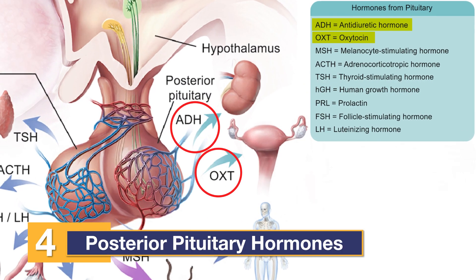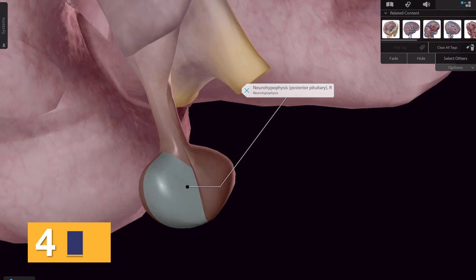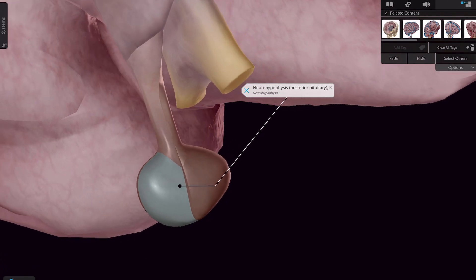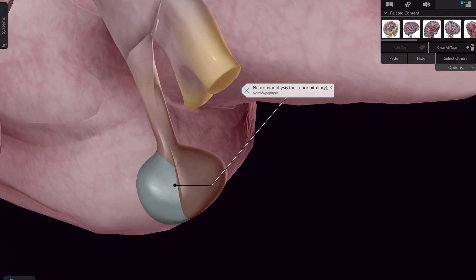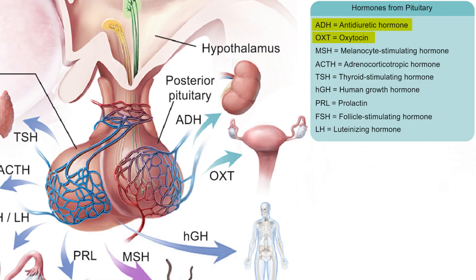Antidiuretic hormone, or ADH, and oxytocin, or OXT, are secreted into the posterior pituitary lobe by axonal extensions from the hypothalamus. The posterior pituitary stores ADH and OXT and releases them directly into the bloodstream when needed.